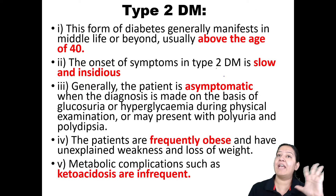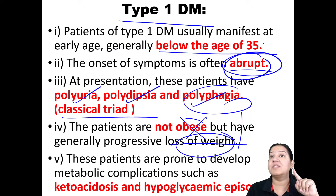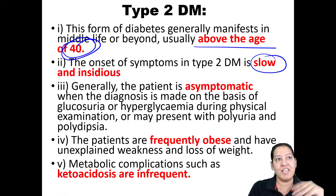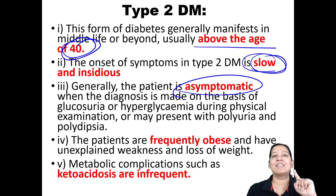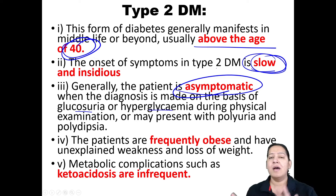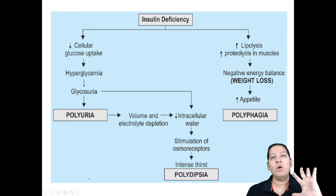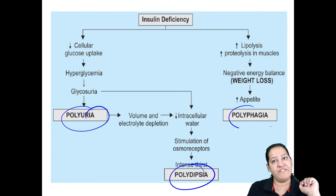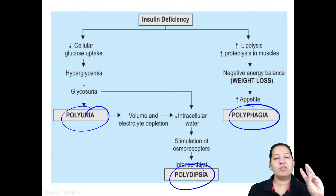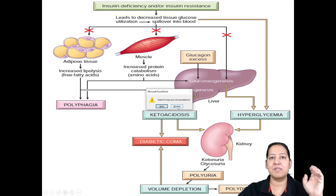In type 2 diabetes, the patient is usually diagnosed after 40 or 50 years, the onset is slow, and patients are usually asymptomatic. Diagnosis is often a coincidental finding based on glycosuria or hyperglycemia on some other blood investigation. Patients are usually obese and ketoacidosis is rare here. I have already explained the reasons for triple P in the last lecture — this is episode 4, please watch episode 3 if you missed it.